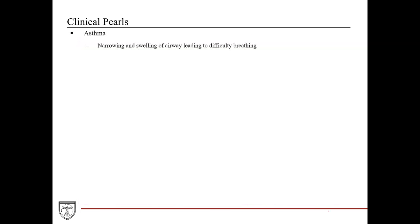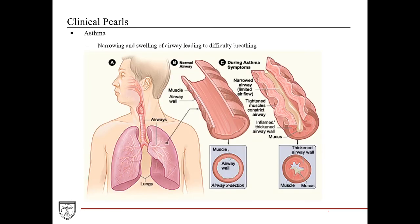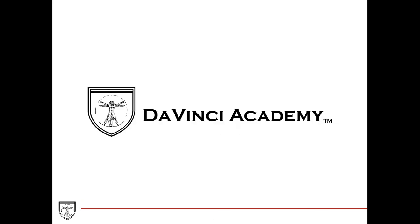Asthma is characterized by narrowing and swelling of the airway leading to difficulty breathing, which can be transient, and is often accompanied by increased production and secretion of mucus. During an asthma flare-up, the smooth muscle layer of the bronchioles especially tends to contract, and the mucosa becomes inflamed with increased mucin secretion into the airway, drastically reducing the airway space and decreasing air flow into the alveoli, causing shortness of breath. That concludes the respiratory system histology. Thank you and see you next time!